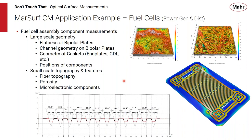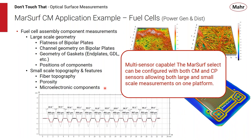Fuel cells — power generation and storage. This is both a CM and CP application on a bipolar plate. The CP tool measures flatness, channel spacing, or feature size at very high speed and resolution. The CM handles diffusive layers — looking at very small porosities, individual fibers, and fiber morphology on the diffusion layers. With the CM Select's multiple-sensor capability, several different tasks within this one application can be handled, including any micro-electronic components in the fuel cell assembly.